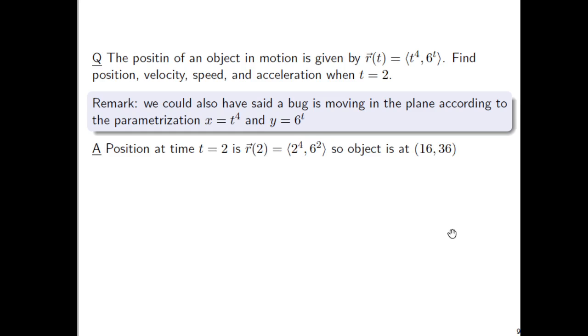Great. So, if we just pass back and forth between the vector and the point, the object, the bug, whatever, will be located at the point (16, 36).